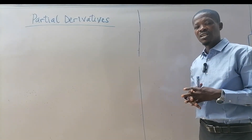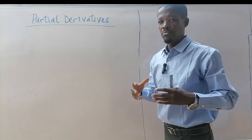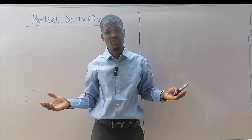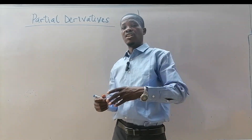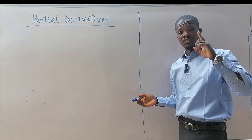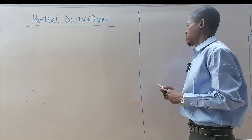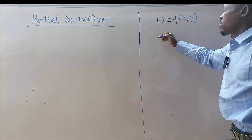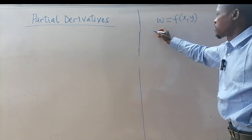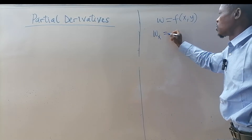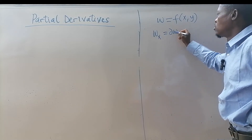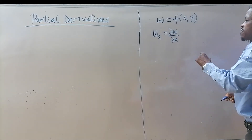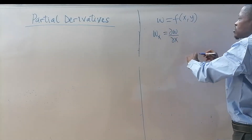We are looking at partial derivatives. In partial derivatives we have more than one variable — if you have two or three variables, unlike ordinary differential equations which have just a single variable. If you have w as a function of two variables, we can use the following notation: partial differential with respect to x, same thing as del w over del x, which means we are differentiating the function with respect to x.